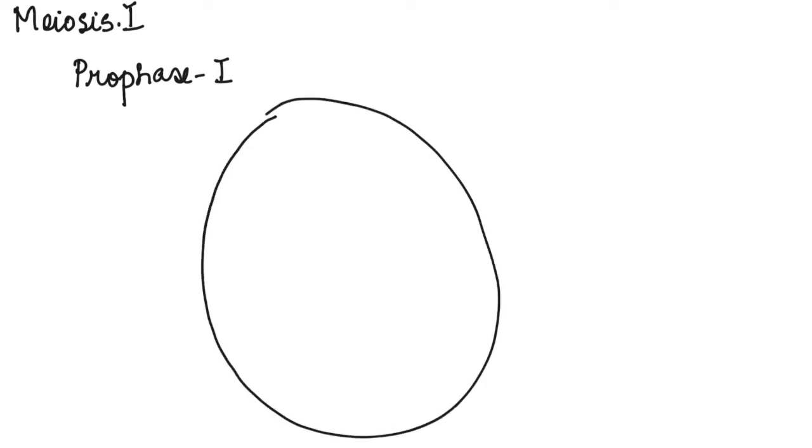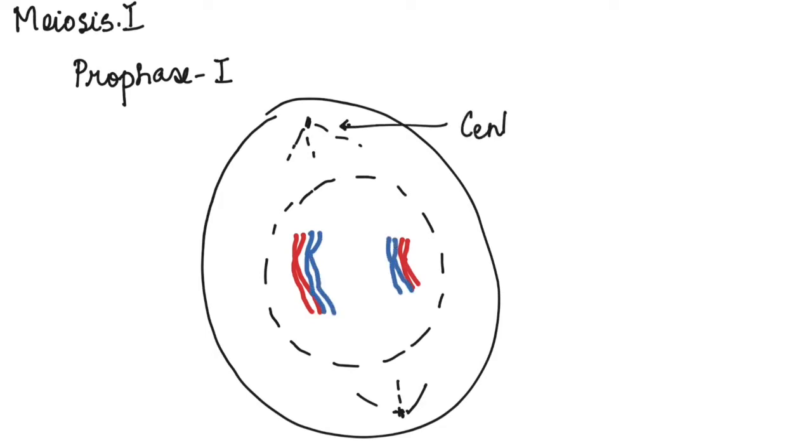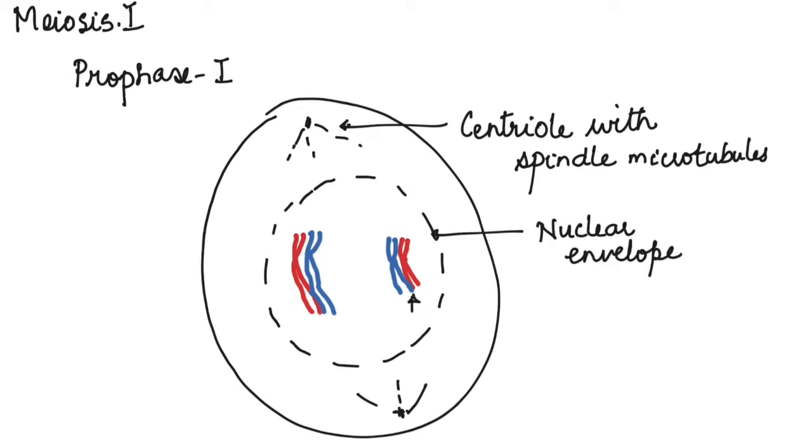Let's begin by drawing the prophase stage. So here I have drawn the cell with the nuclear membrane as a dotted line and the blue representing the paternal and the red representing the maternal chromosomes. The centrioles have moved towards the poles with spindle microtubules arising from it. Nuclear envelope is shown in dotted lines as it is disintegrating and the homologous pairs are seen here as they pair up in a process called synapsis.